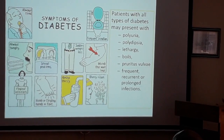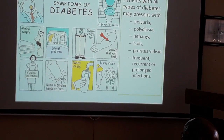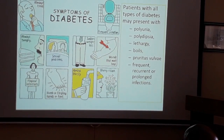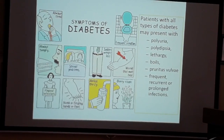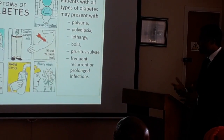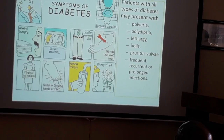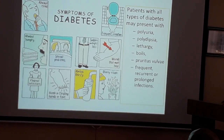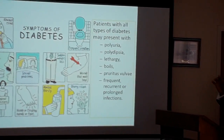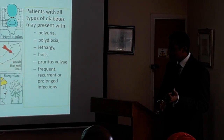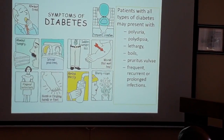You lose weight because glucose isn't being processed in the cells. Wounds won't heal because high glucose levels affect immunity and damage blood vessels, reducing nourishment to wounds. There can be infections and numbness and tingling in the hands and feet — called a glove or sock distribution — which indicates nerve damage. So diabetes affects vessels, the immune system, and nerves.